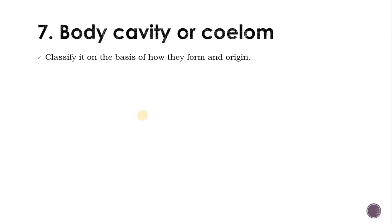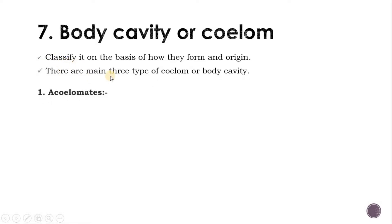The presence or absence of the coelom inside the body is one of the characteristics for classifying animals. The coelom is fluid-filled. The scientific definition: the coelom is a fluid-filled body cavity present between the alimentary canal and the body wall. Between ectoderm and endoderm there is a coelom lined by mesodermal epithelial cells. On the basis of how they are formed and their origin, there are three main types of coelom or body cavity found in animals.